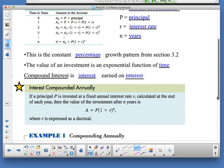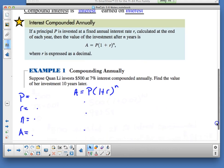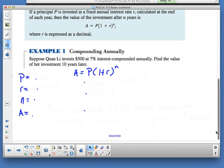If the principle P is invested at a fixed annual interest rate R, calculated at the end of the year, then the value after N years is A = P(1 + r)^n. When I talk about 8%, it's 0.08 in R. N is the number of years I'm working with. If I'm going to compound annually, I've got the formula I'm going to use: my principle, my rate, the number of years.